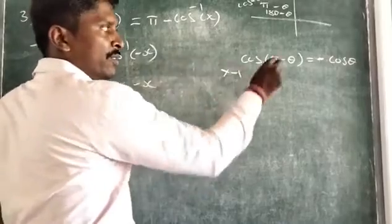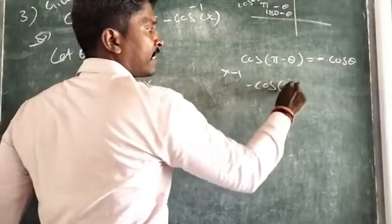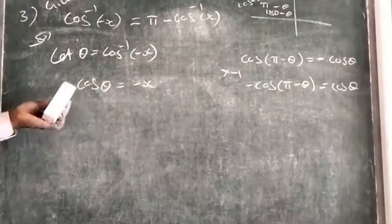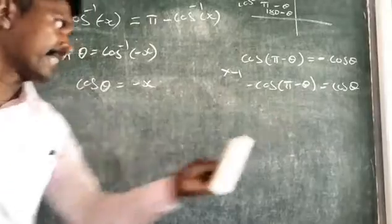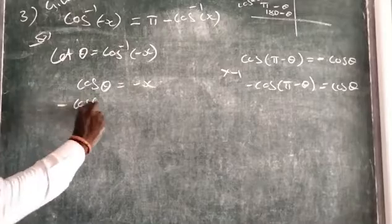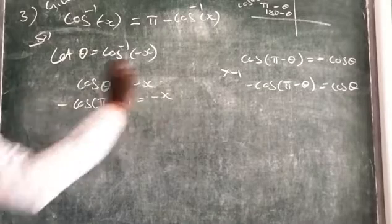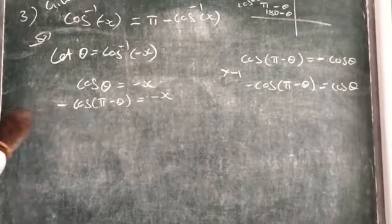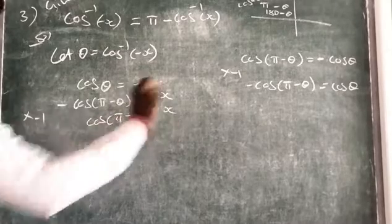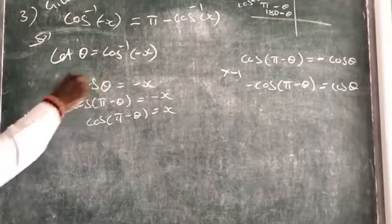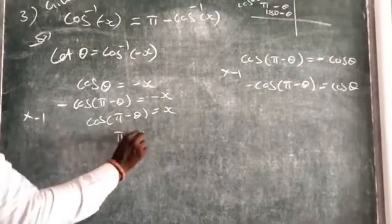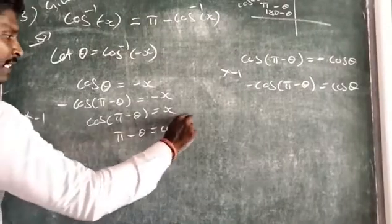Now multiplying both sides by -1, it becomes -cos(π - θ) = cos(θ). So instead of cos(θ) I substitute -cos(π - θ) equal to -x. Multiplying the entire equation by -1 gives cos(π - θ) = x. Applying cos⁻¹, it becomes π - θ = cos⁻¹(x).